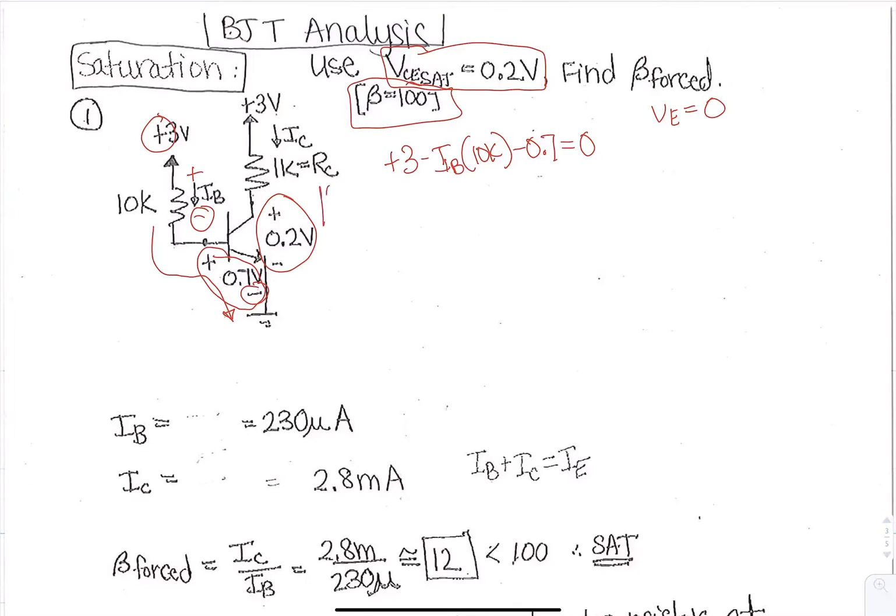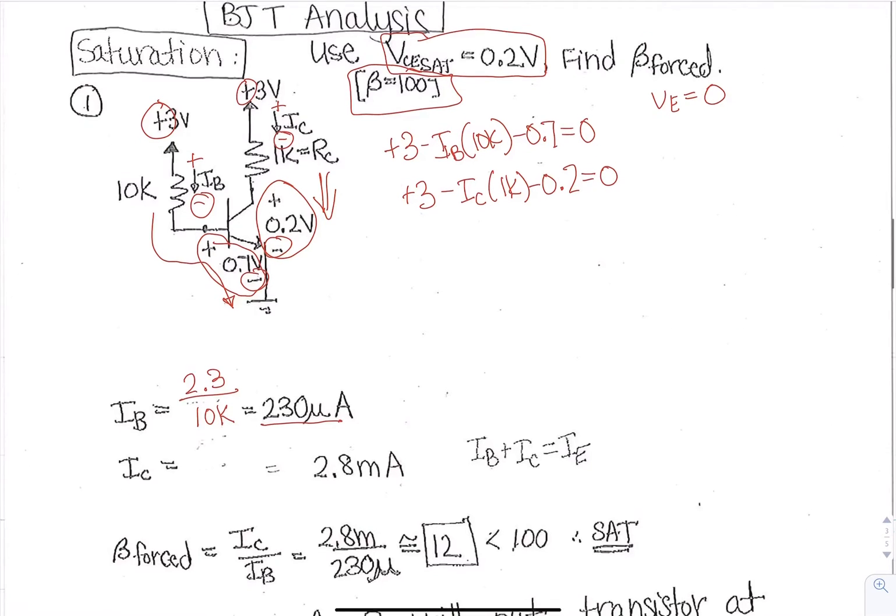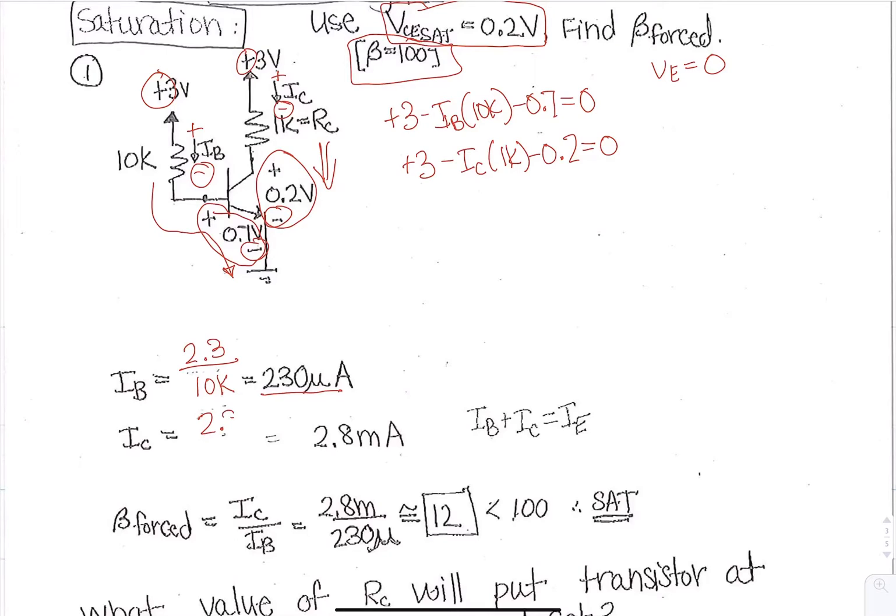The loop through the collector to the emitter is going to be a plus and then a minus and a minus, so plus 3 minus IC times 1k minus 0.2 equals 0. These can be directly solved since we only have one variable for each. So IB is just going to be 2.3 over 10k and that gives a value of 230 microamps, and the IC is just 2.8 over 1k for a value of 2.8 milliamps.